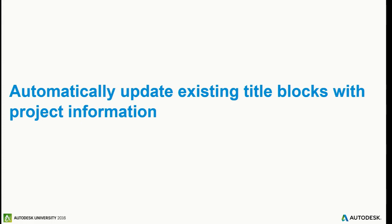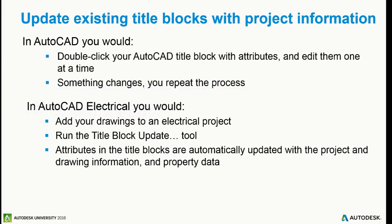Make sure your attributes are the way you want them because you're going to end up mapping them. In AutoCAD Electrical, you would probably go in and double-click on the title block. If anybody isn't using an attributed title block, you're going around and editing text — that's a downside. Everybody here knows what attributes are in a block. If you double-click on it, you get that attribute editor and you're editing each line, and that can take some time.